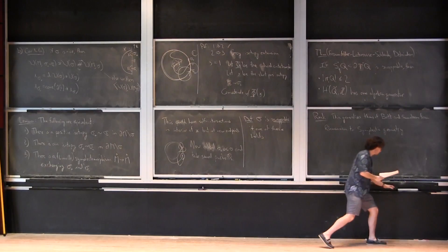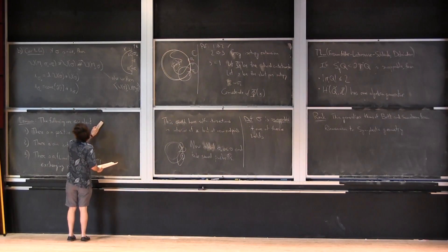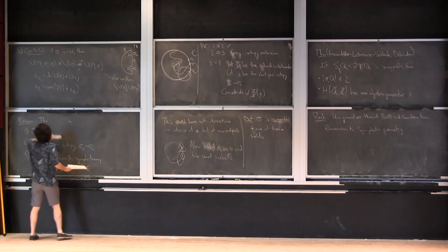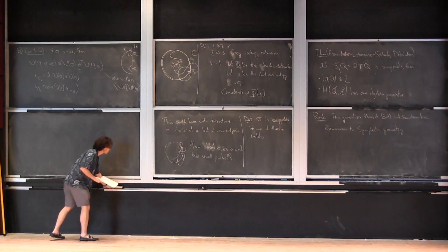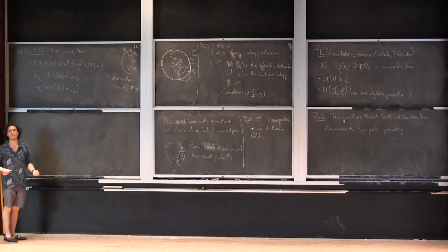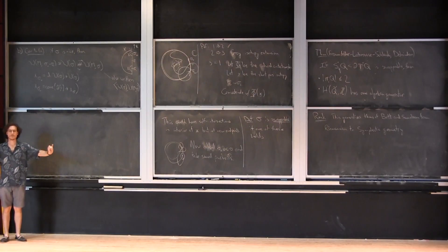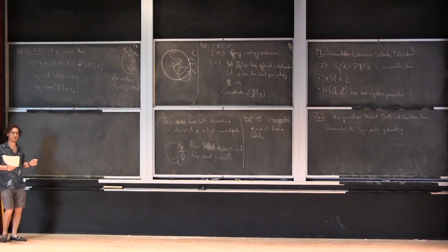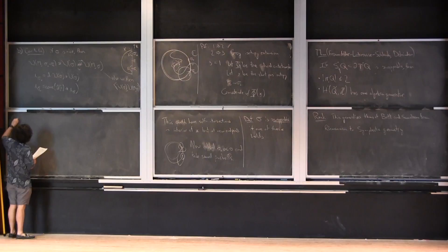Already in the simplest example — a cotangent bundle with the conormal to a point — swappability tells you something very interesting about Q, about the manifold itself. When I talk about swappability without specifying which condition, I usually have in mind the last condition — the existence of a symplectomorphism or contactomorphism — because that's kind of the most general-looking one, even though they're all equivalent.